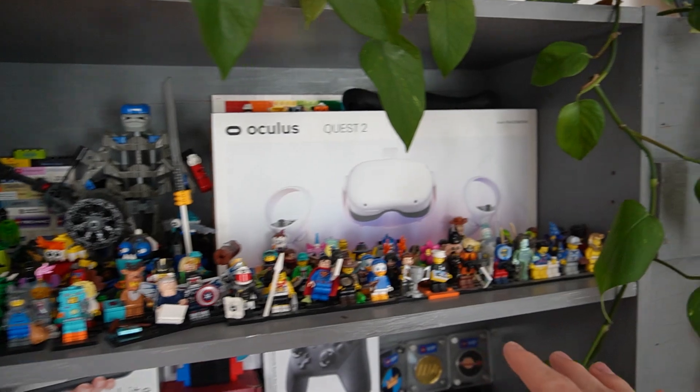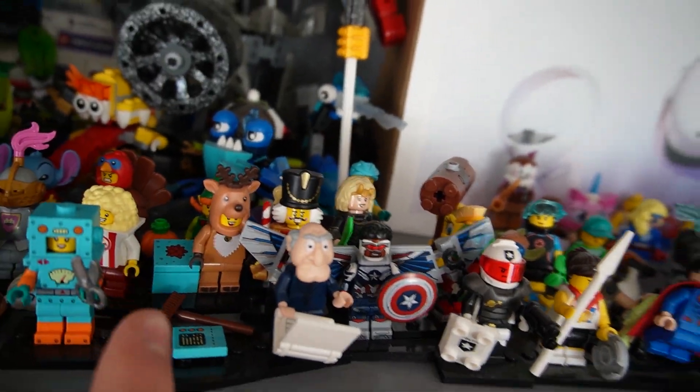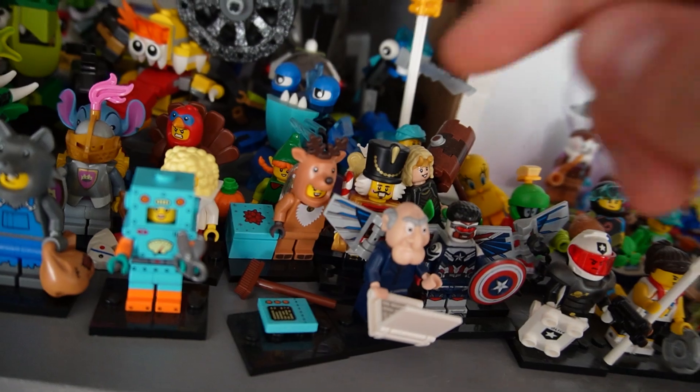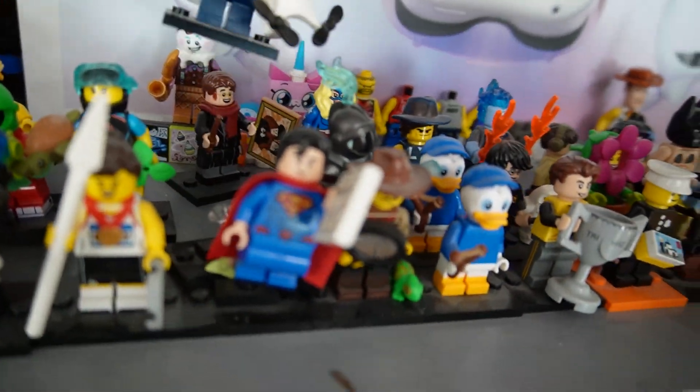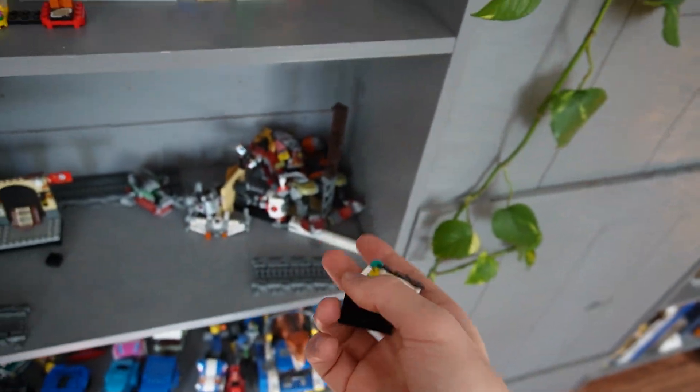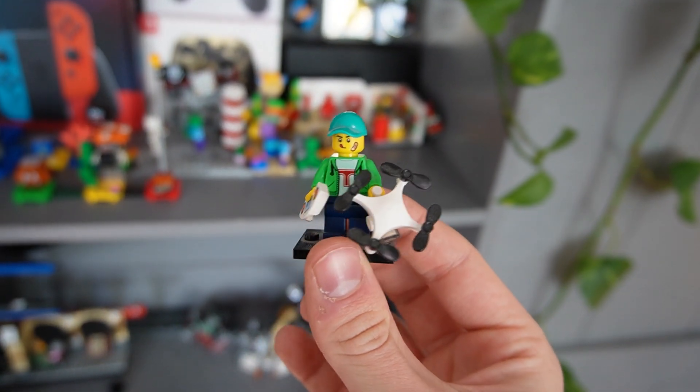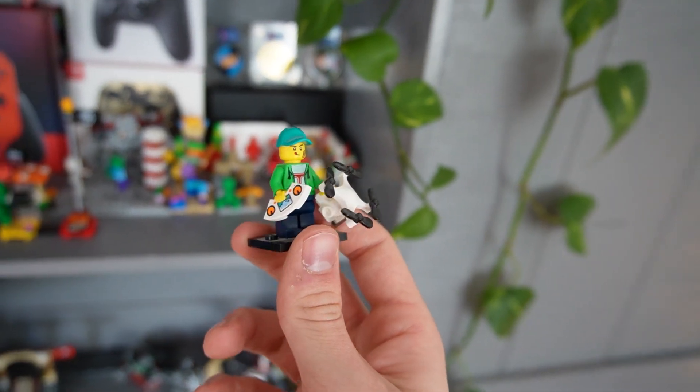These are my collectible minifigures right here and I'm looking through these and there's only a couple with green shirts. There's an elf back here with a green shirt but the one that I'm looking at is this drone guy right here. So he doesn't have like the perfect shirt. He's got like a green jacket with a white t-shirt inside. I'm going to try this torso. I think it'll work pretty well.